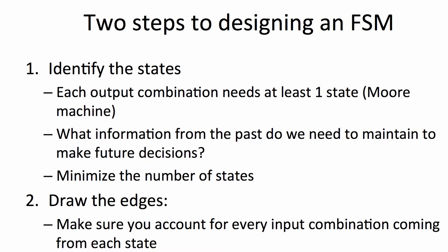Designing a finite state machine is really a two-step process. In the first step, we're going to identify the states. Because we're using Moore machines, one reason we need to allocate states is to give different output combinations. So for each different combination of outputs, we need at least one state. From there, we need to decide what information from the past we need in order to decide what outputs to give in the future — is there anything we observe through the execution that we need to remember to make a future decision? The third part is to minimize the number of states, because the fewer states we have, the simpler the implementation and the less likely we are to make an error.